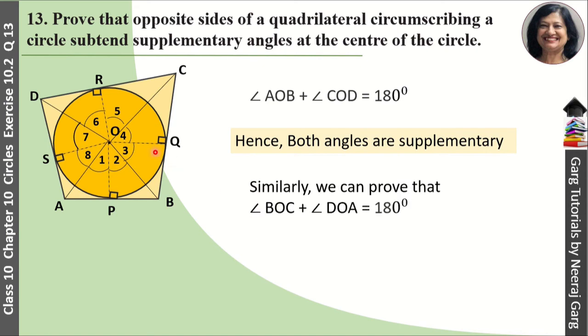But angle 1 plus angle 2 plus angle 5 plus angle 6 is equal to angle AOB plus angle COD, which equals 180 degrees. Similarly, we can prove that angle BOC plus angle AOD also equals 180 degrees.